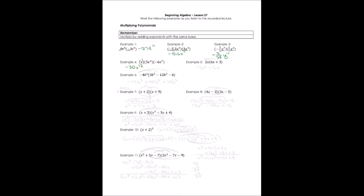Example 5 requires us to distribute multiplication — we multiply the first term times each term inside the parentheses. 2x times 6x gives us 12x squared, and 2x times 3 gives us plus 6x.